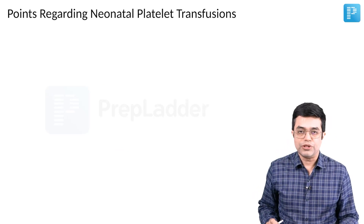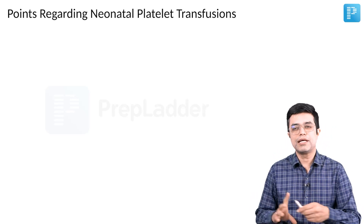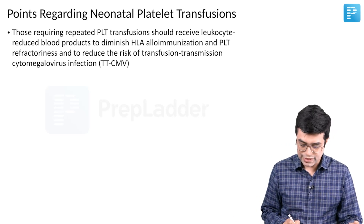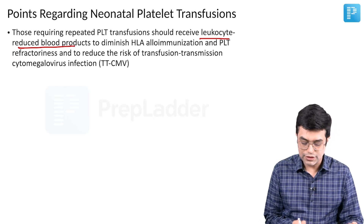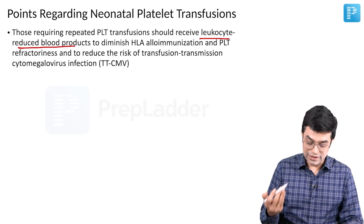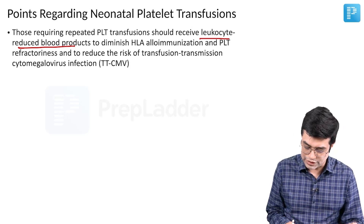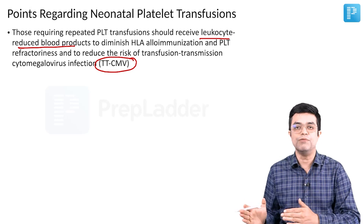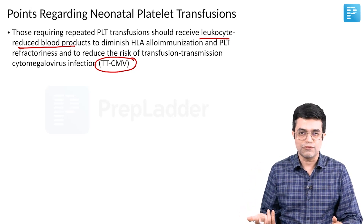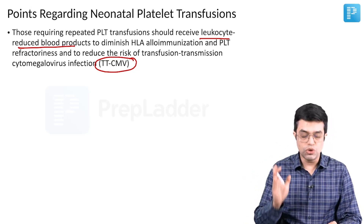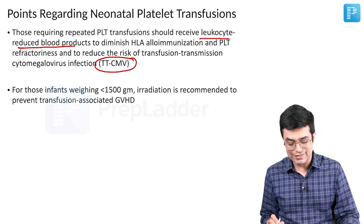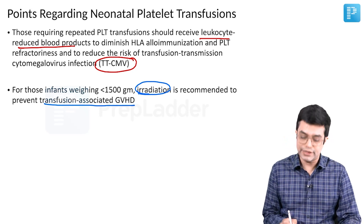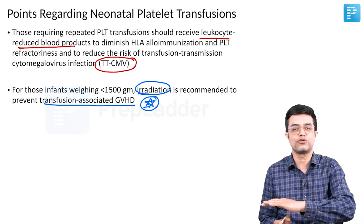Regarding neonatal platelet transfusion — the same principles apply for children up to 2 to 3 months of age. Neonates who require repeated platelet transfusion should receive leukocyte-reduced blood products to decrease chances of HLA immunization, reduce platelet refractoriness, and reduce the risk of transfusion-transmitted CMV (TTCMV). For infants less than 1500 grams birth weight, irradiation should also be recommended to prevent transfusion-associated graft-versus-host disease — this is a potential MCQ point.